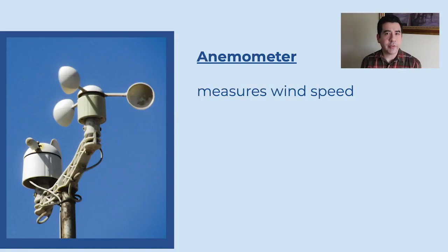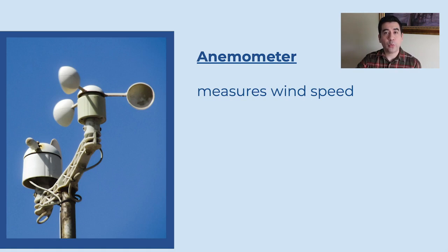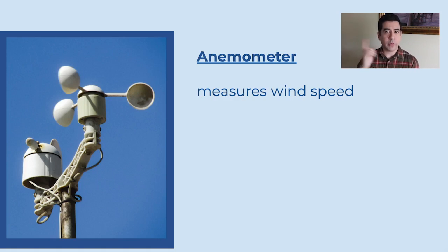Just like there are different kinds of weather, there are different kinds of weather tools that scientists use. One type of weather tool that meteorologists use is the anemometer. An anemometer measures wind speed. An anemometer has cups — special kinds of cups that are attached to it — and the faster the wind blows, the faster those special cups spin around. That's able to measure the speed of the wind.